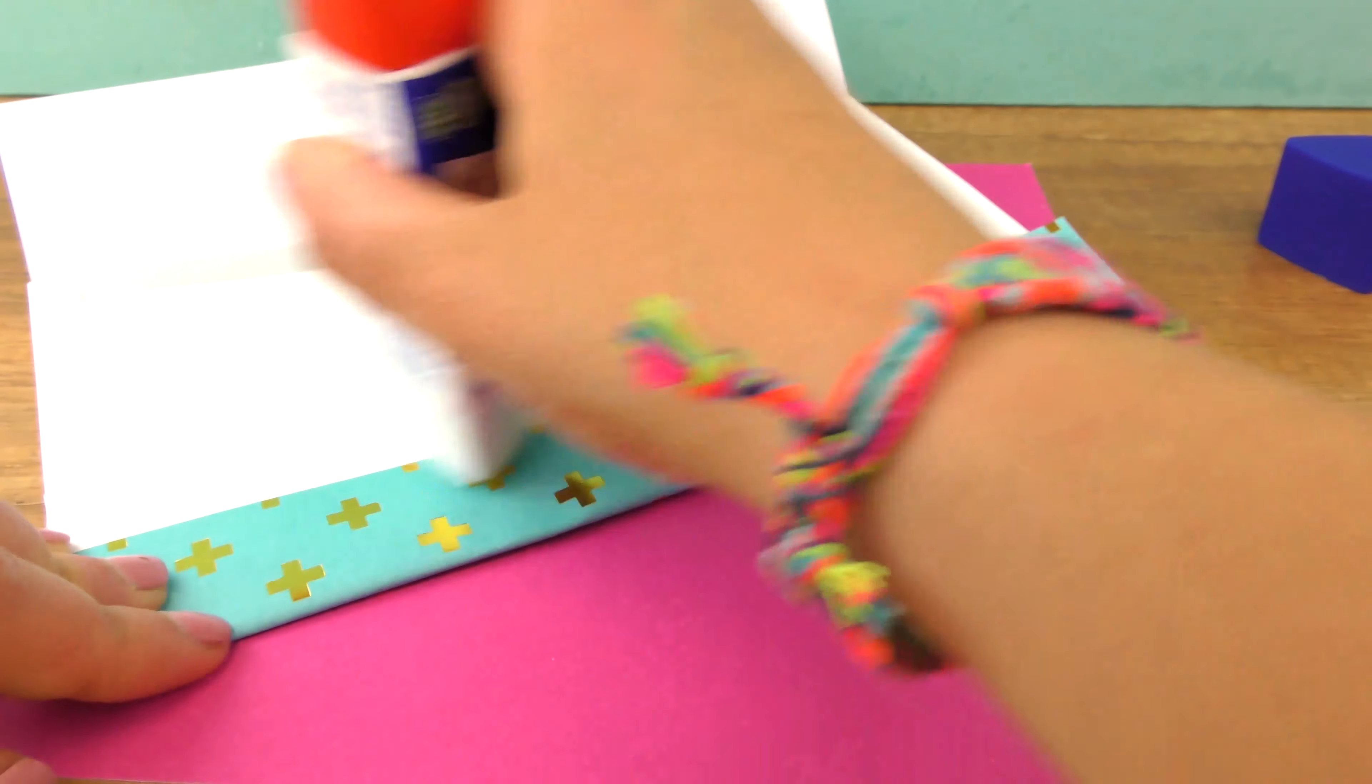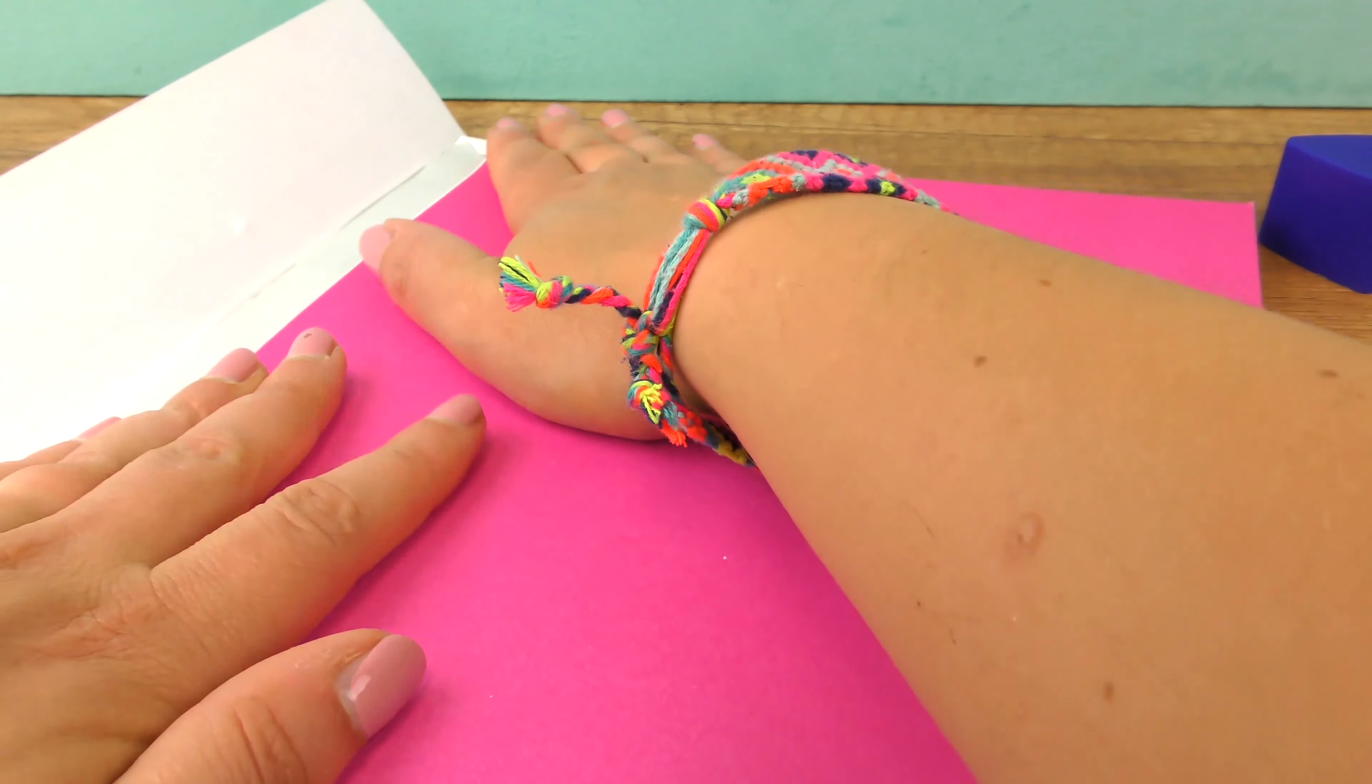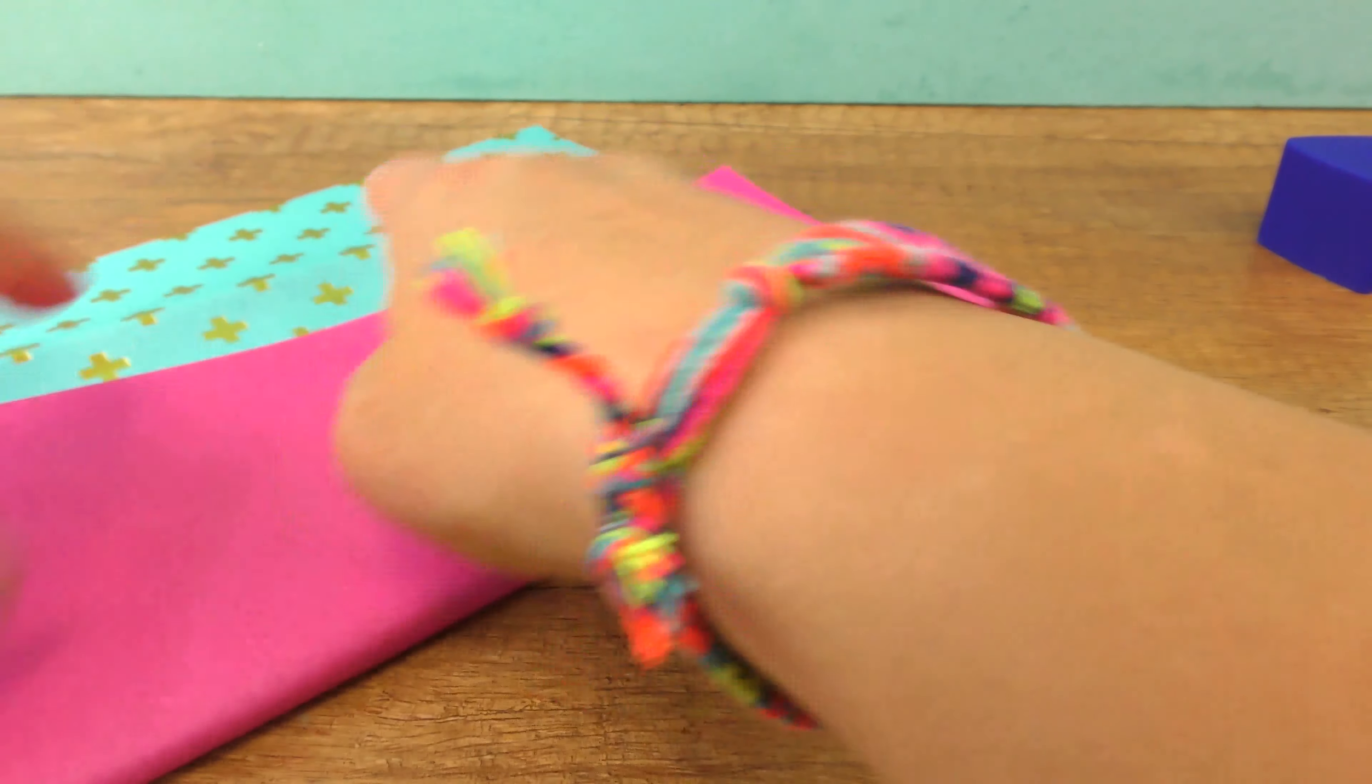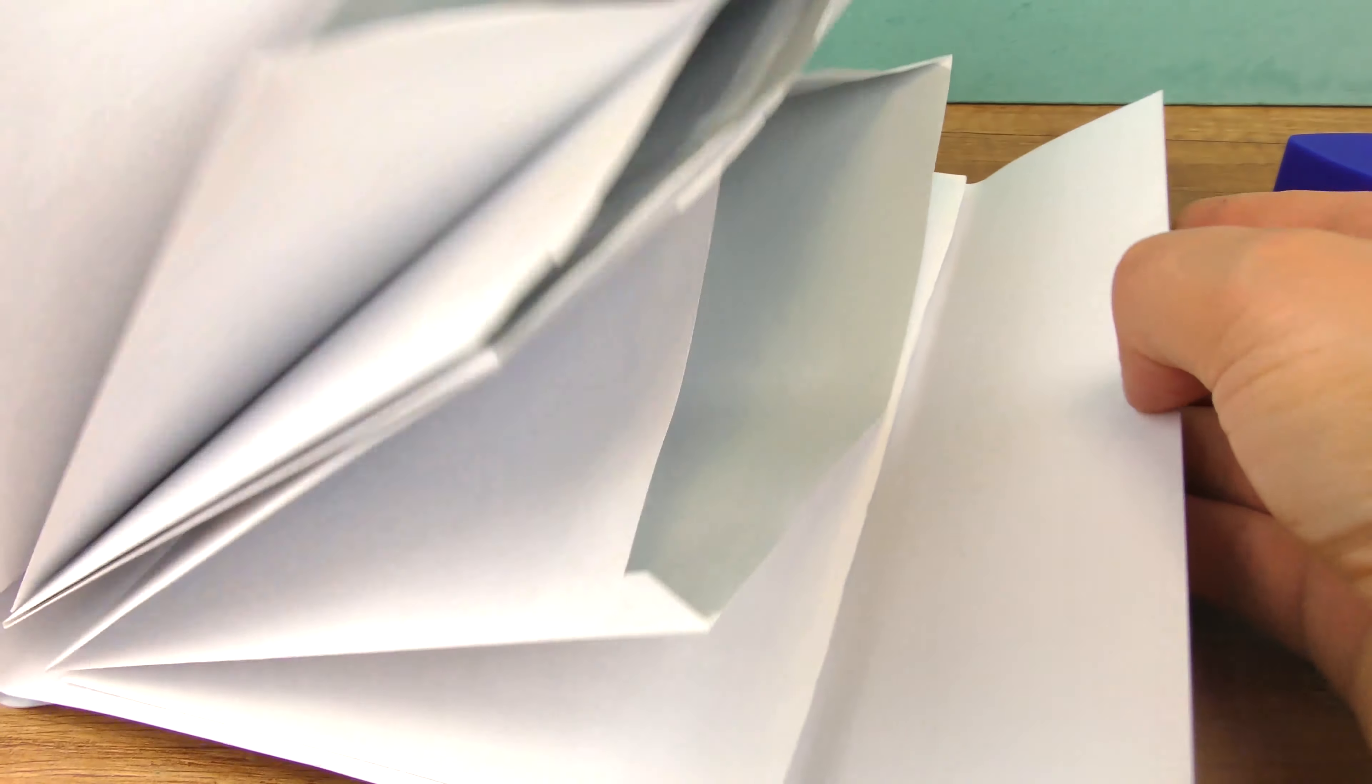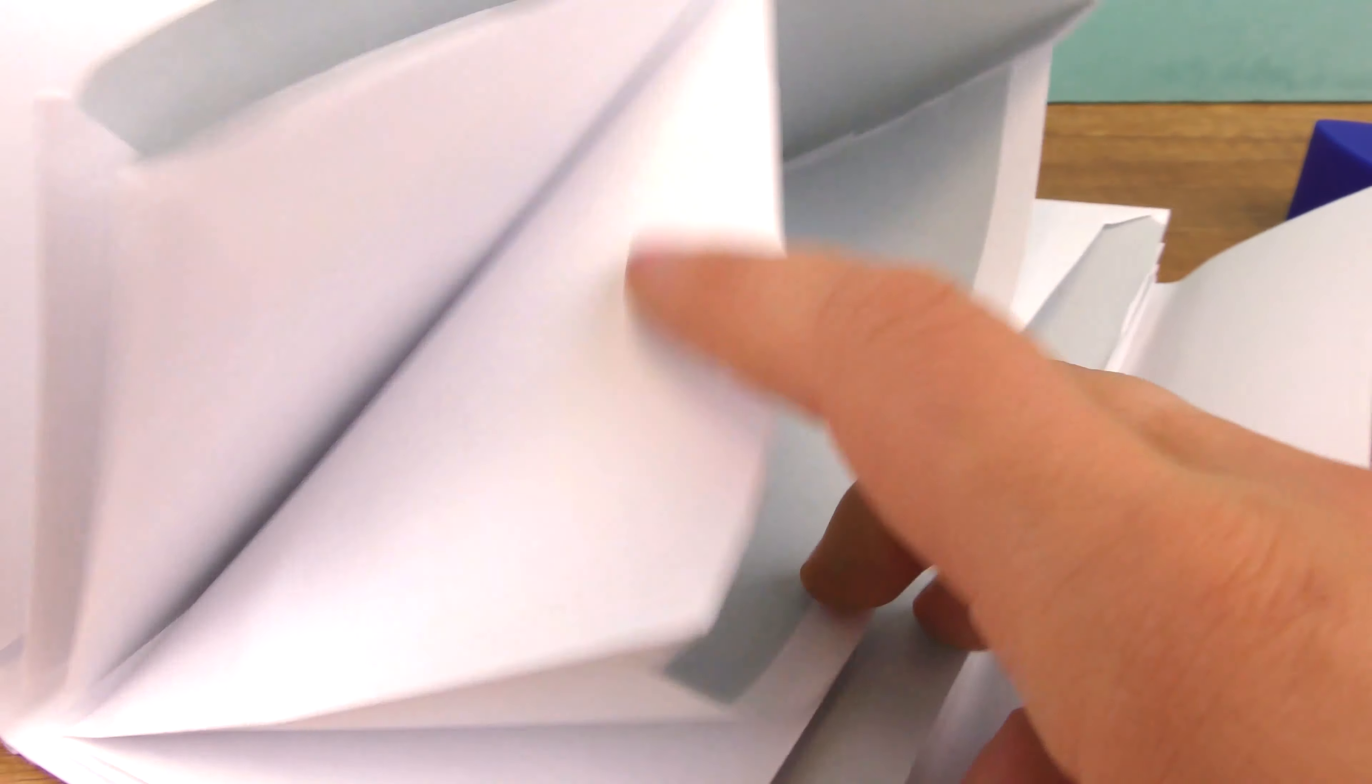I'll glue the pink over this section. Turn and finish this section as well. Let the glue dry now. Okay, so here we are. This looks amazing.